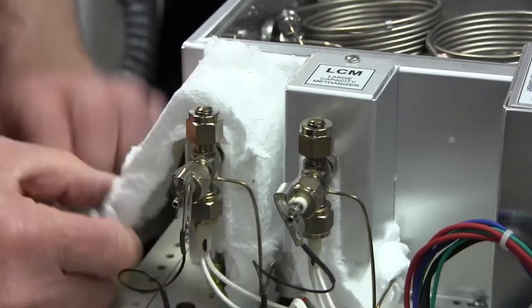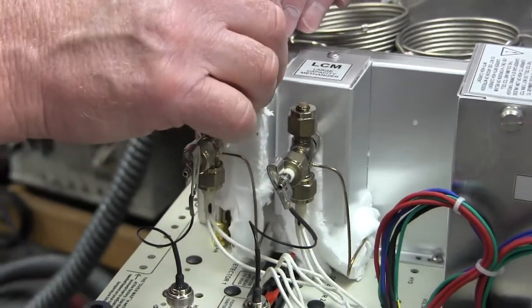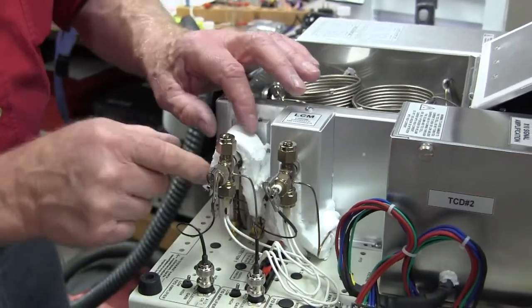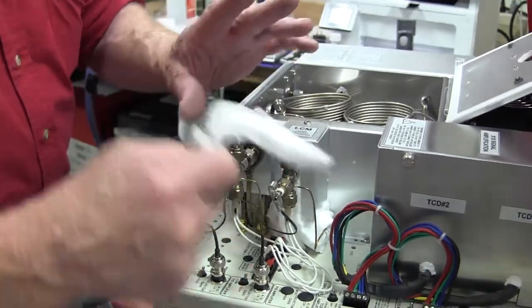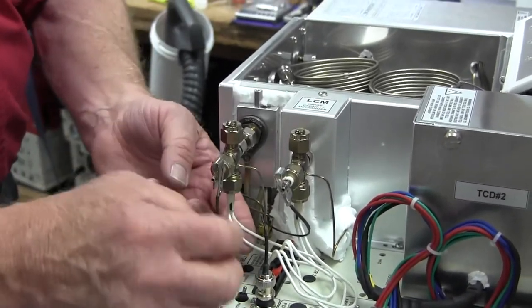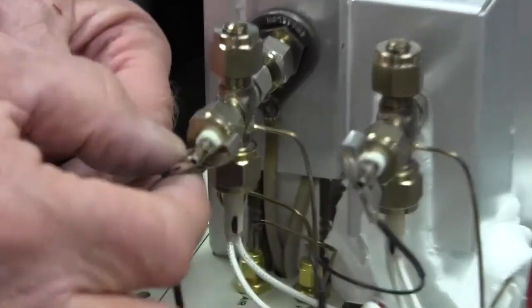Be gentle and try not to break the insulation, it kind of pills and fuzzes. Take the insulation off, try not to wreck it. This is the collector electrode of the FID.